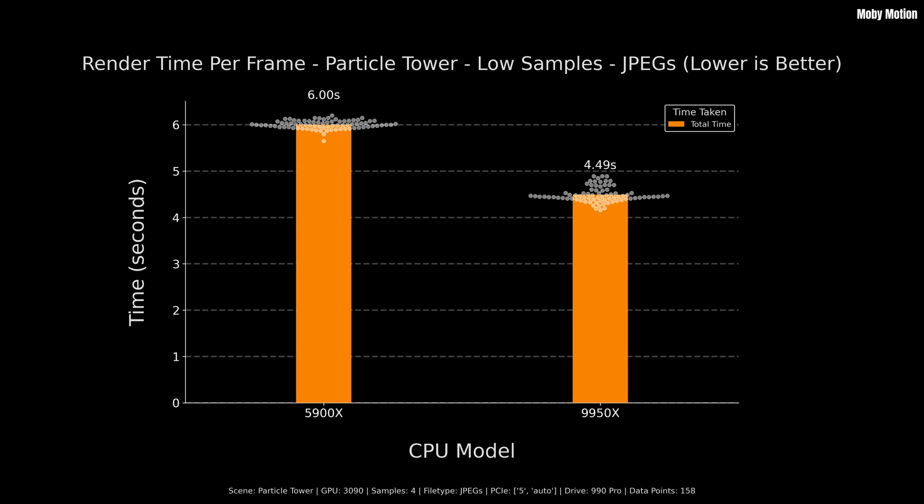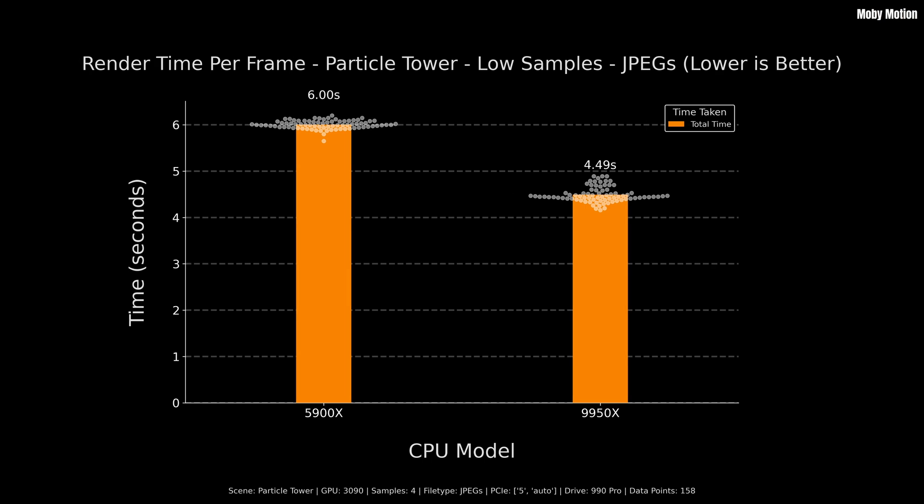Let's jump into the first set of results. This is for the particle tower with a low number of samples, rendering to JPEG. Both systems are rendering using OptiX with Open Image Denoise, using the GPU for denoising as well. Same graphics card — the 3090 — but when it's paired with a 9950X, it renders more than 33% faster. To figure out why this is happening, we have to dig a little deeper.